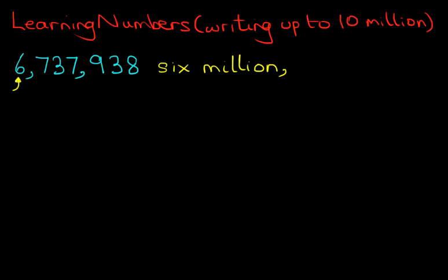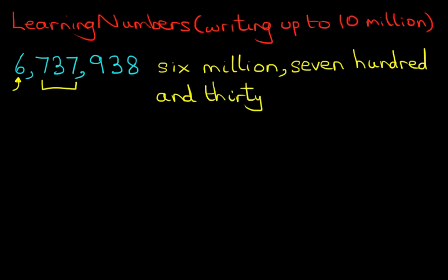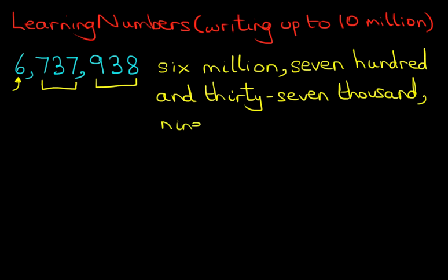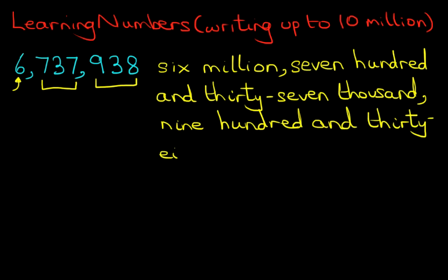6,000,000 with a comma. And now we move on to the thousands. We've got 737,000, another comma, and we're left with the final three digits. 6,737,938. It's all very simple.